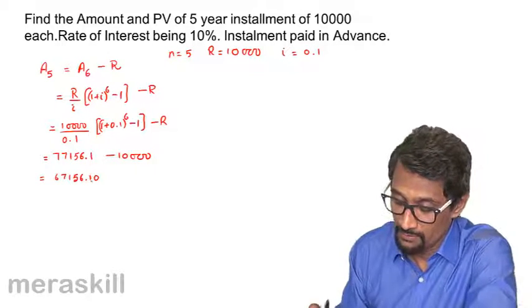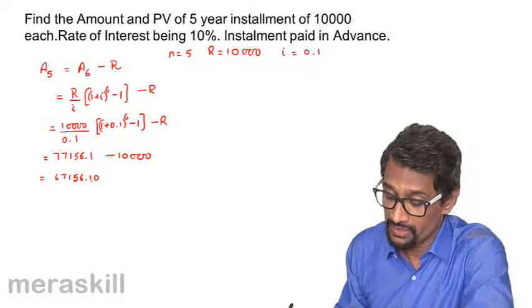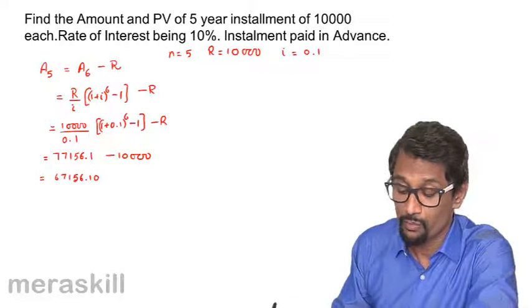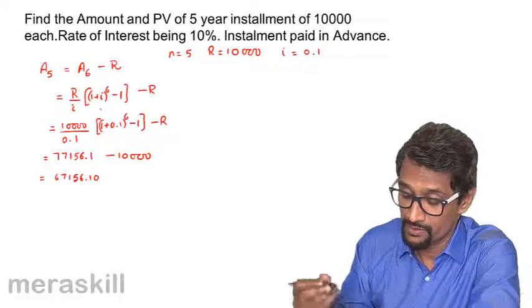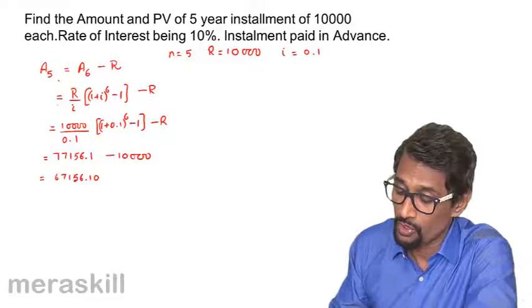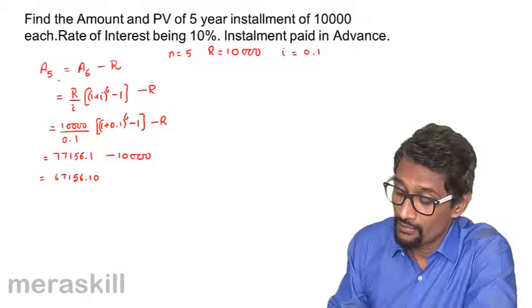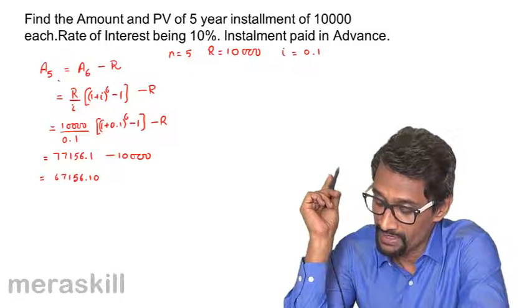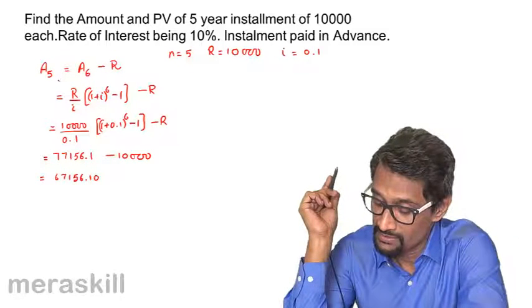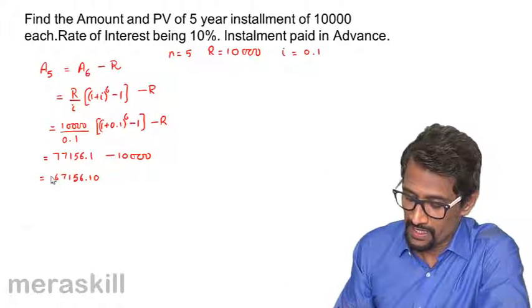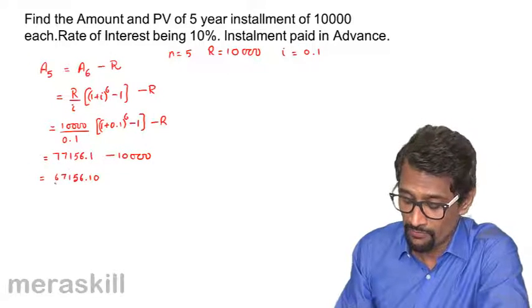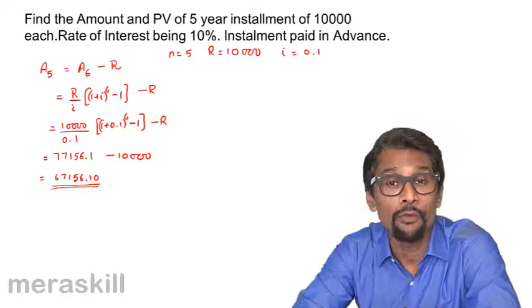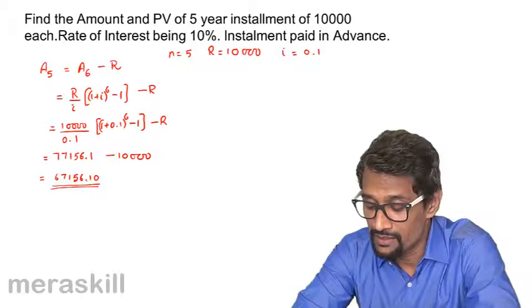This is the amount calculated for 5 installments when you are paying in advance. So this is the amount for 5 years if you are paying in advance.